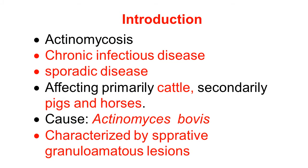In this presentation, we will understand what actinomycosis is. It is a chronic infectious disease, and in all animals it mostly produces chronic infections. The disease generally does not occur in endemic or epidemic form, but occurs as a sporadic form — scattered cases. Actinomycosis primarily affects cattle, and secondarily pigs and horses.